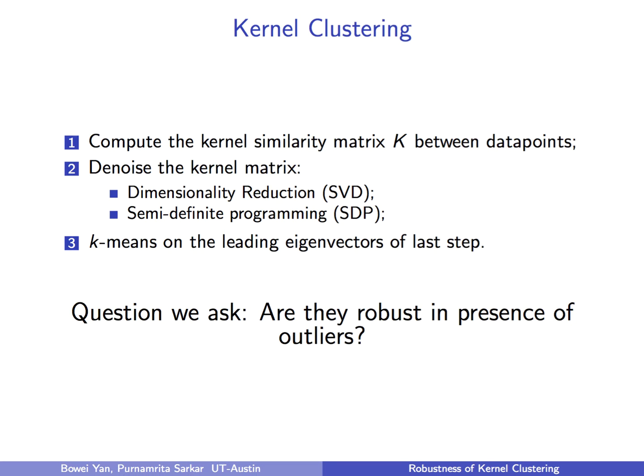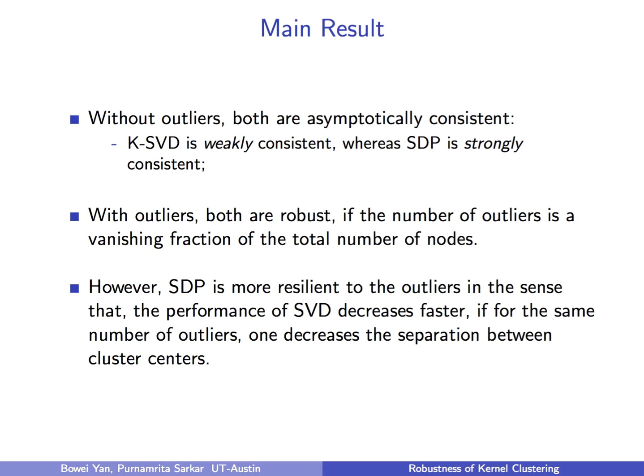Despite the wide-ranging applications and numerous work on clustering, little attention has been paid on the robustness of different algorithms in the presence of arbitrary outliers. In this paper, we show theoretical results comparing these two methods.